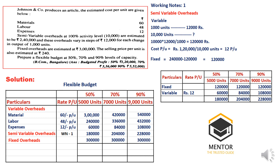Fixed overheads are directly given as ₹3 lakhs at every capacity level — 5,000, 7,000, or 9,000 units. After calculating total cost, we write sales at ₹240 per unit: 5,000 × 240 = ₹12,00,000; 7,000 × 240 = ₹16,80,000; 9,000 × 240 = ₹21,60,000. Profit (sales minus total cost) comes to ₹1,20,000 at 50%, ₹3,36,000 at 70%, and ₹5,52,000 at 90% capacity.